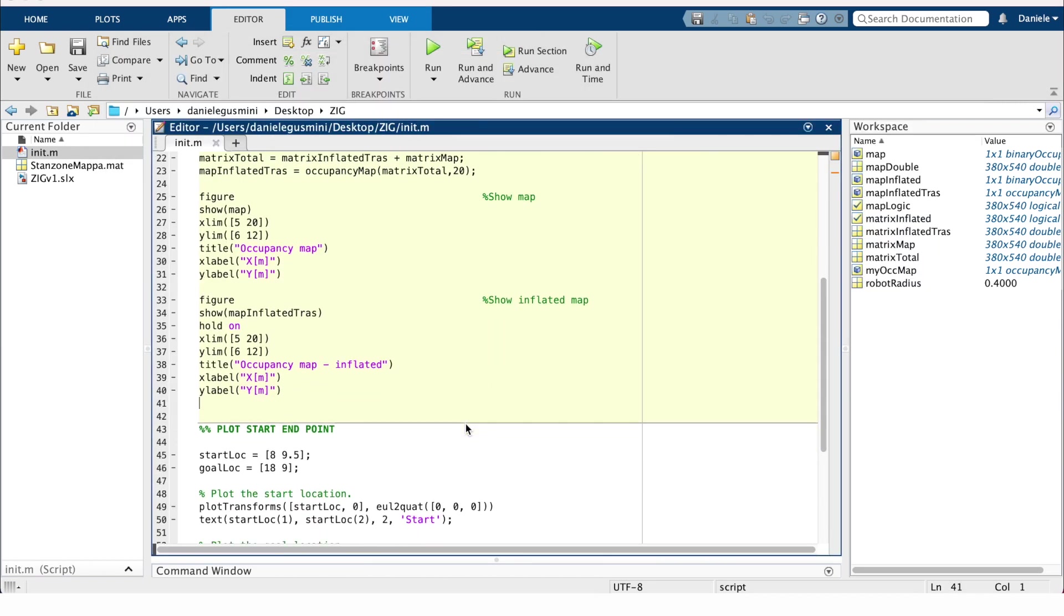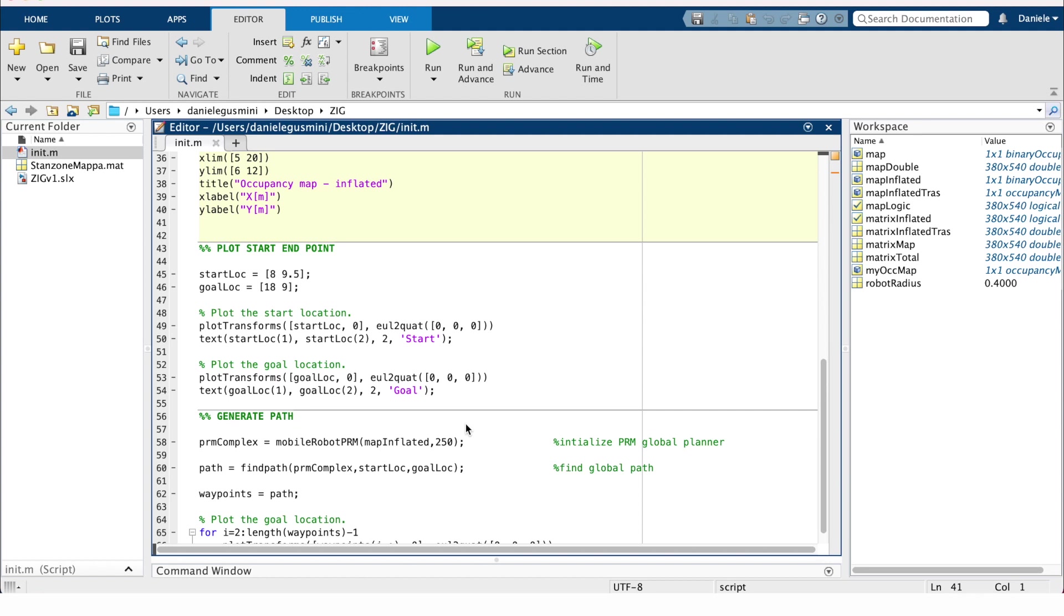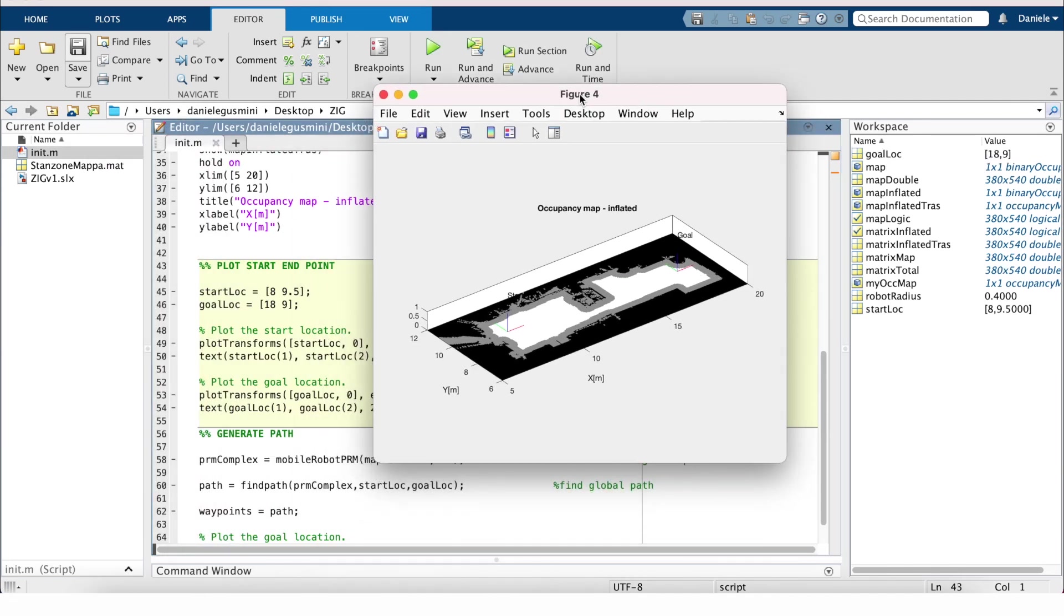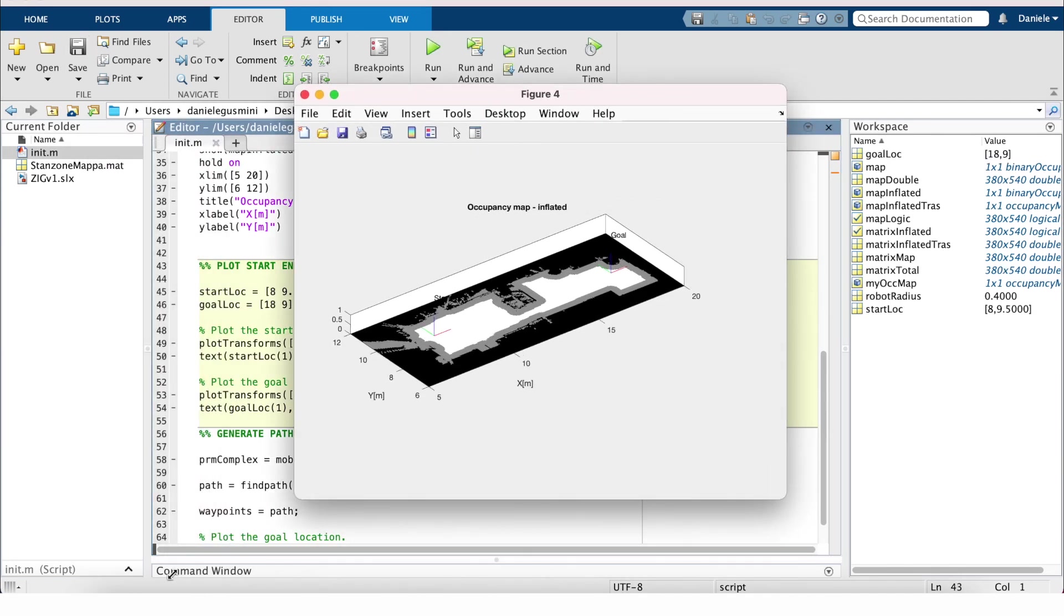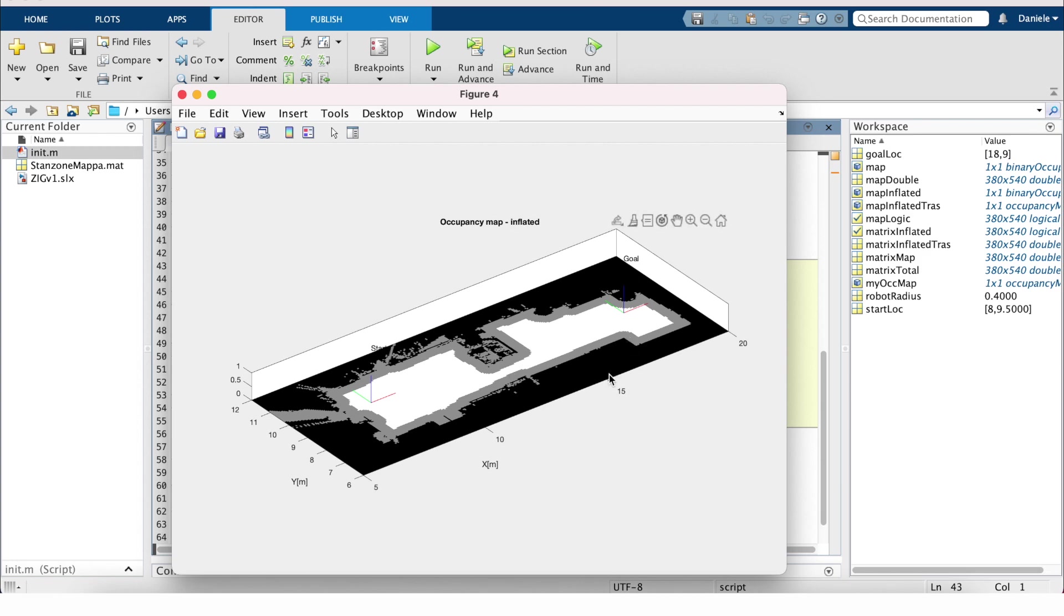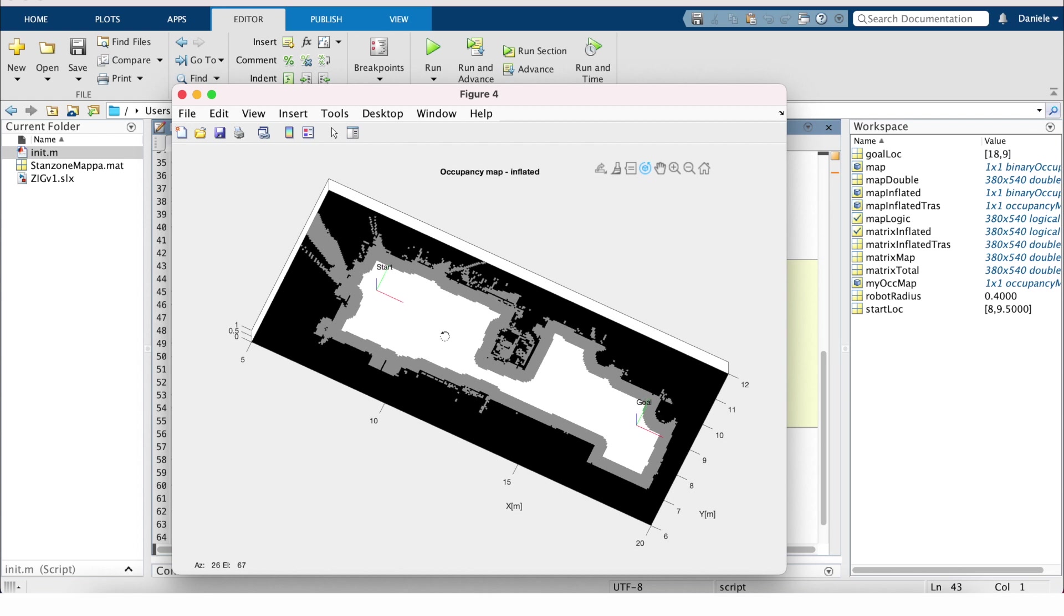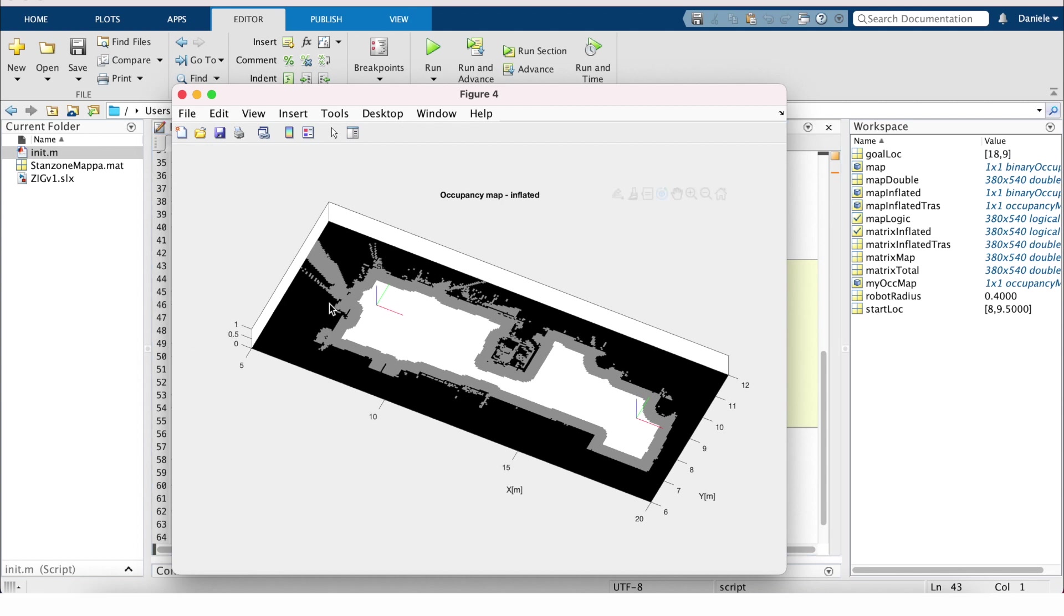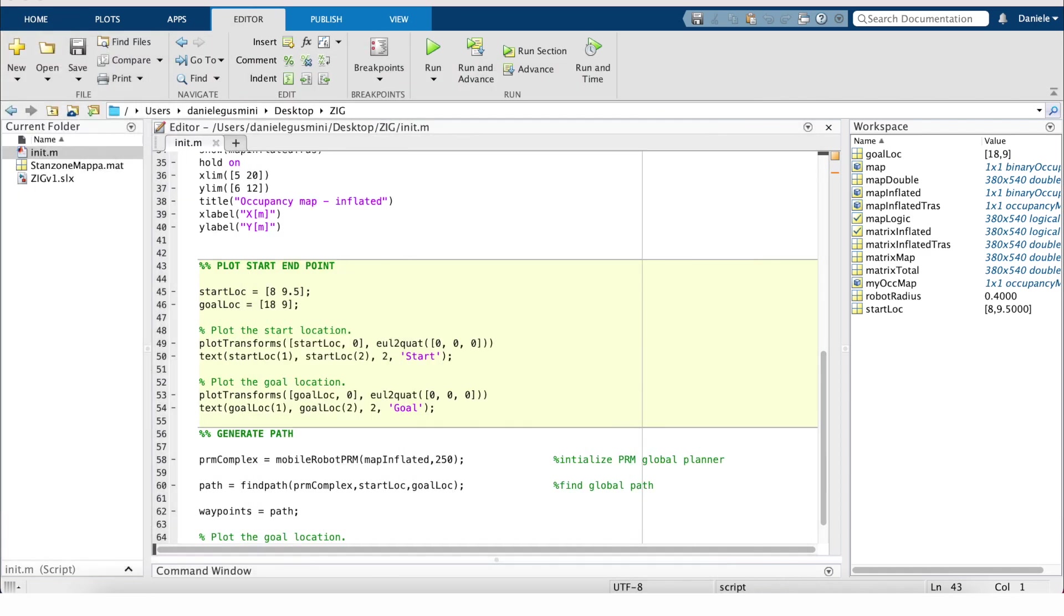Now we have the inflation and can go to the next step. The first one is to define the starting location of our robot and the goal location. In this case, 8 meters, 9.5, and 18, 9. If we run this code, we can see opening the figure, we have a 3D representation of the occupancy map with the starting point and the endpoint. Now we have checked that the actual starting and endpoint are correct. We would like to create our path.